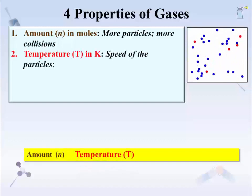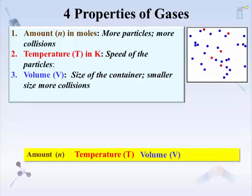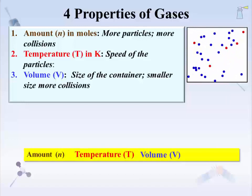Next is temperature, given in or turned into the temperature scale Kelvin. Temperature is a measure of heat and is related to the speed of the particles. Hotter particles move faster, and that causes more collisions. And then there is volume — for example, the size of a container. A small container has walls that are closer together, and there is less available space for the particles to roam, which leads to more collisions.